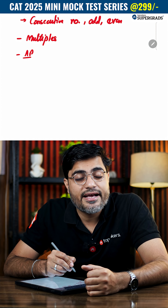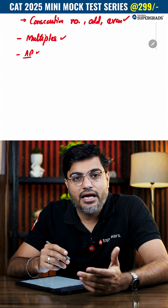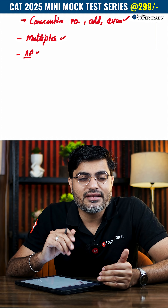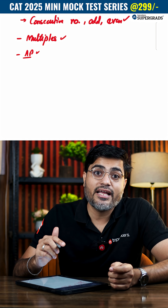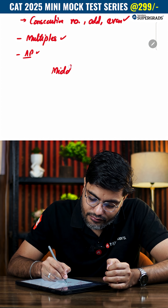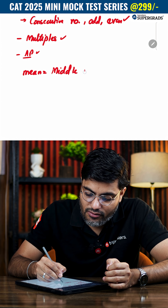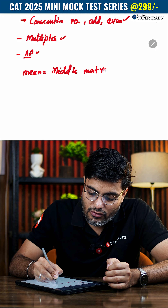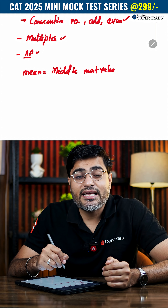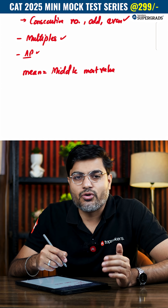All these terms suggest that it is an AP. So whenever you get a hint that the series is an AP, the mean is always the middle — the middle most value. But you might be thinking: if there are an even number of observations, then what do we do? Don't worry.